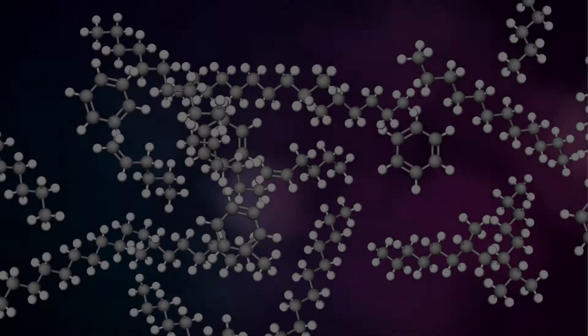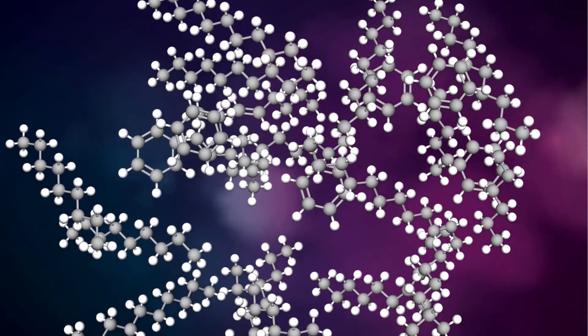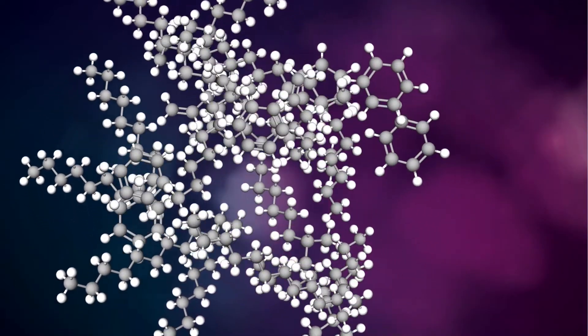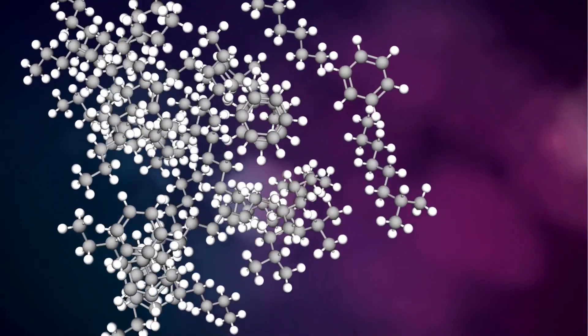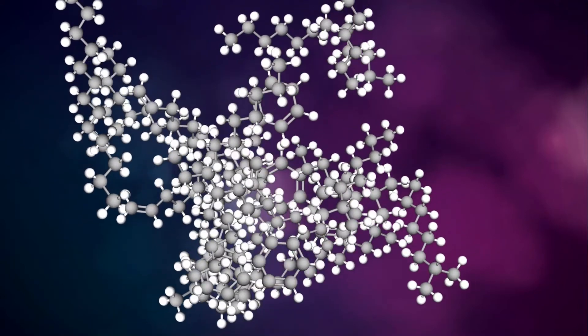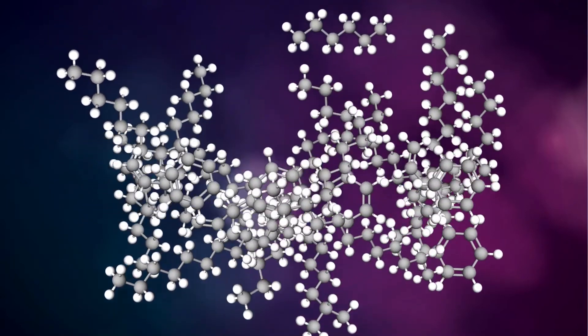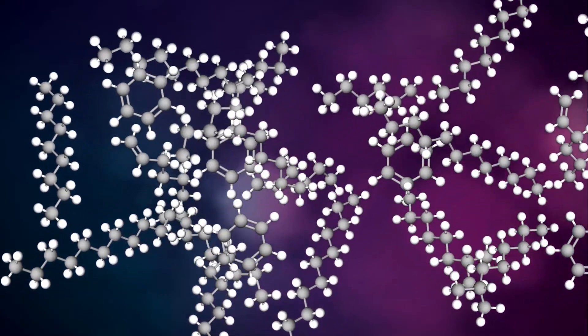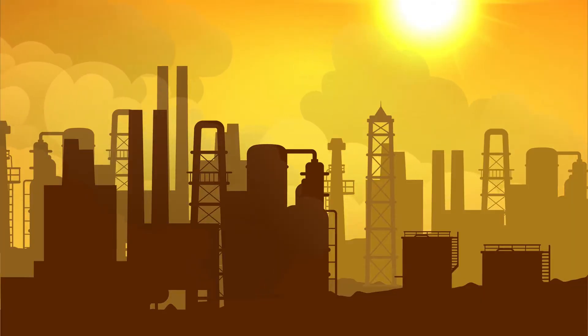In the refineries the complex super molecules within the crude oil are separated by a property of the molecule called the molecular weight. The molecules can then be turned into a huge number of products including fuels such as petrol and diesel for vehicles, engine oil, and the raw ingredients for making plastic.